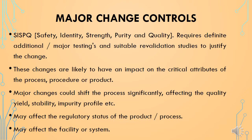The next class of change controls is major change controls. If the proposed change is likely to have an impact on the safety, identity, strength, purity, or quality of the product, then this change shall be categorized under major change controls. Proposals of major changes require additional or major testing or suitable re-qualification or re-validation studies to justify the proposed change. Proper impact assessment shall be required for changes under the major change control category. Major changes are likely to have an impact on the critical attributes of process, procedures, or product, and could shift the process significantly affecting quality, yield, stability, impurity profile, etc. Major change controls may also have an impact on the regulatory status of the product, processes, facility, or systems.